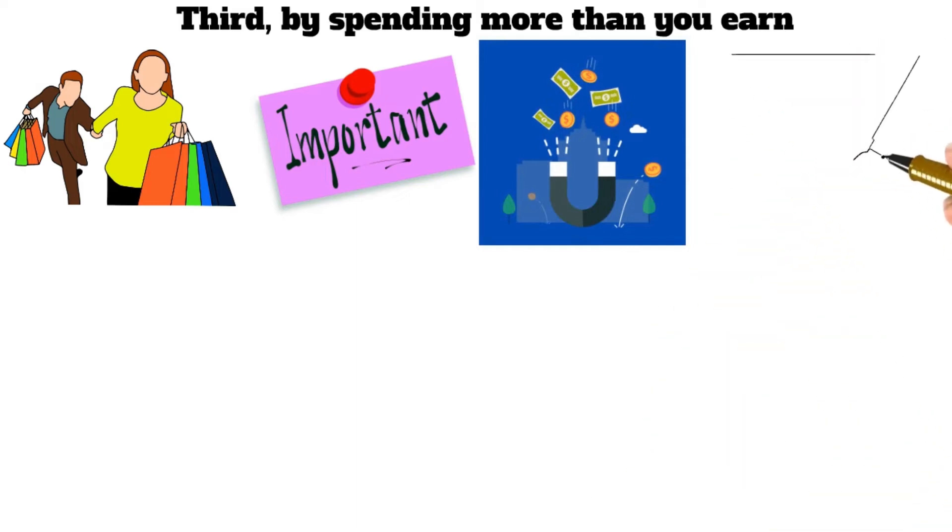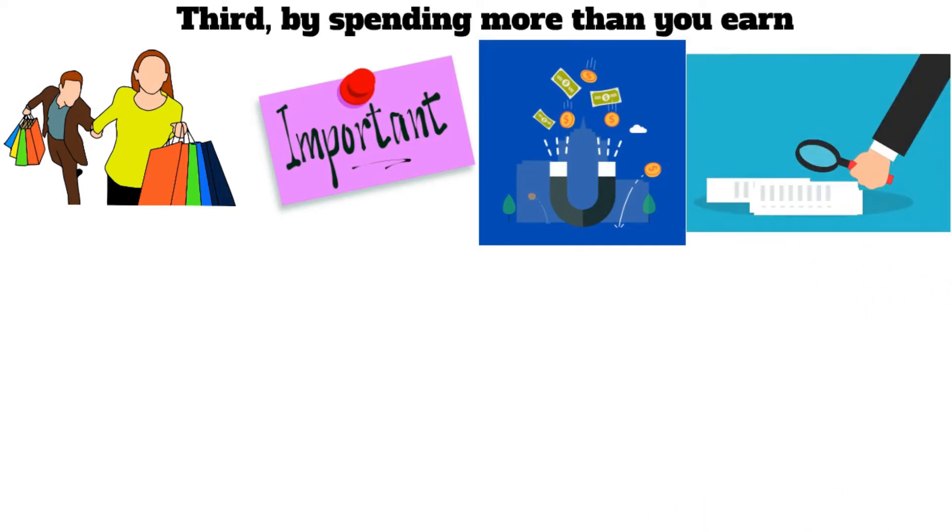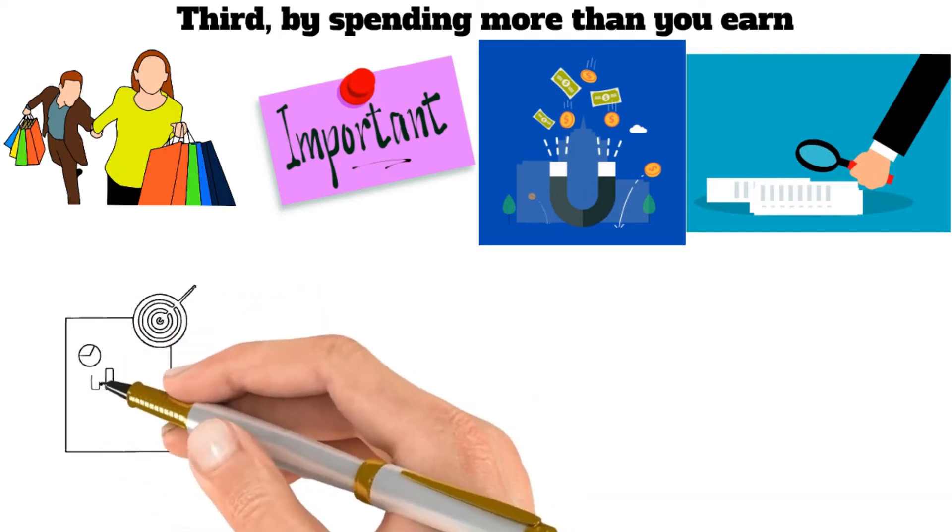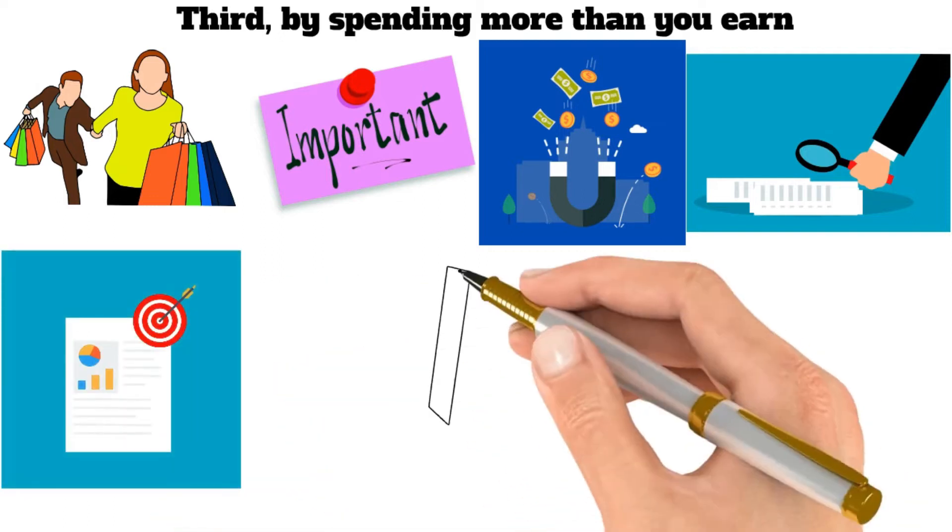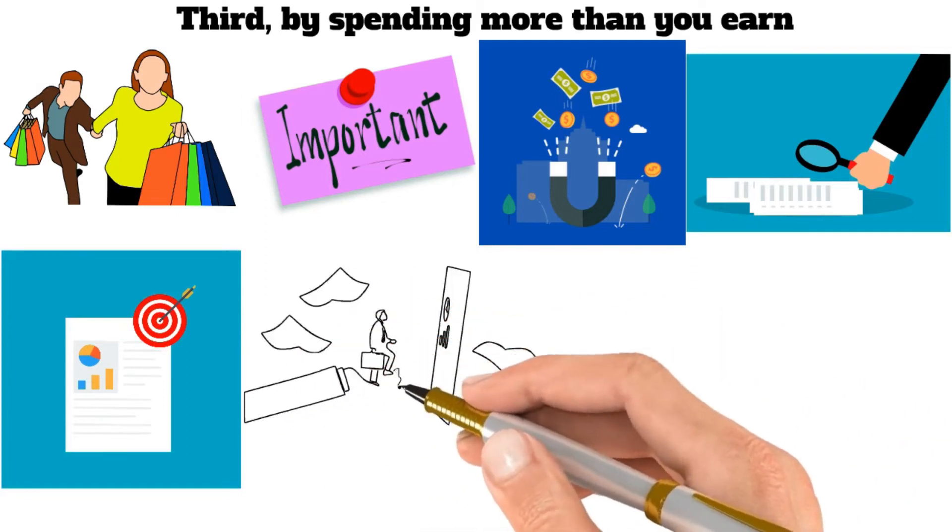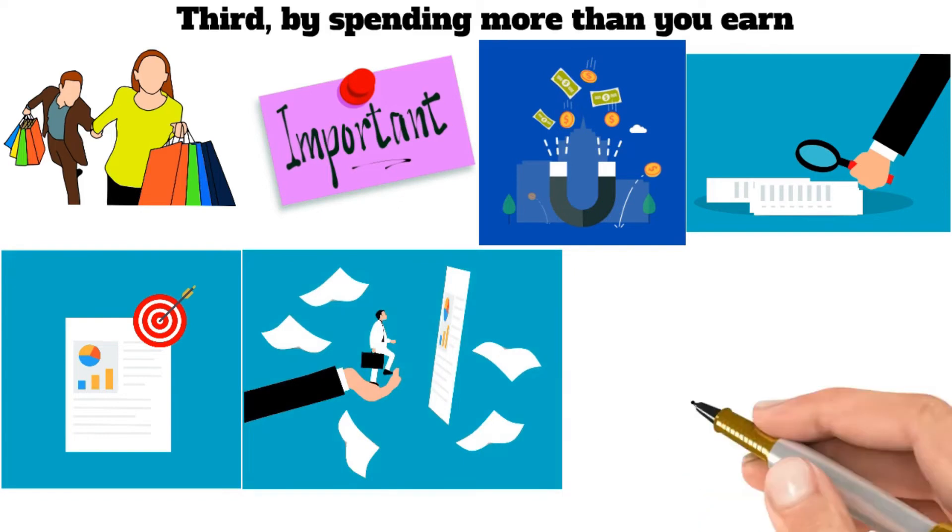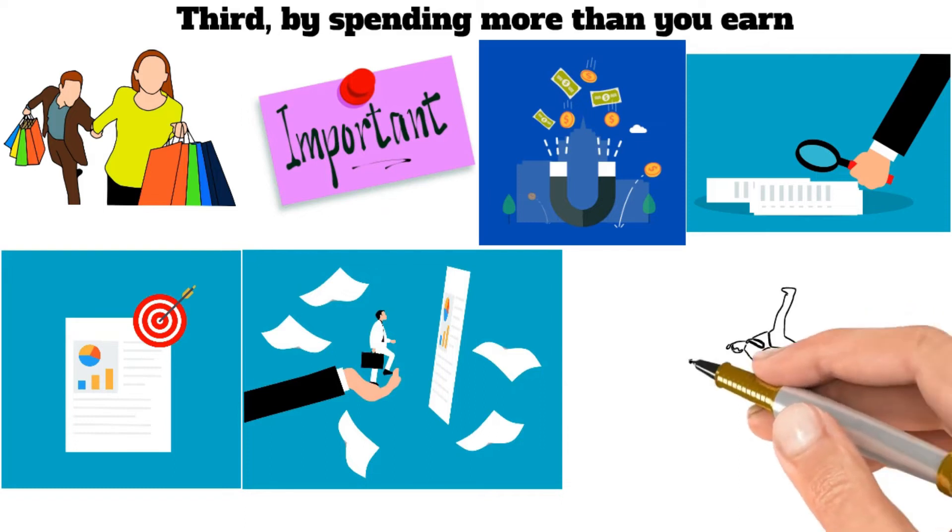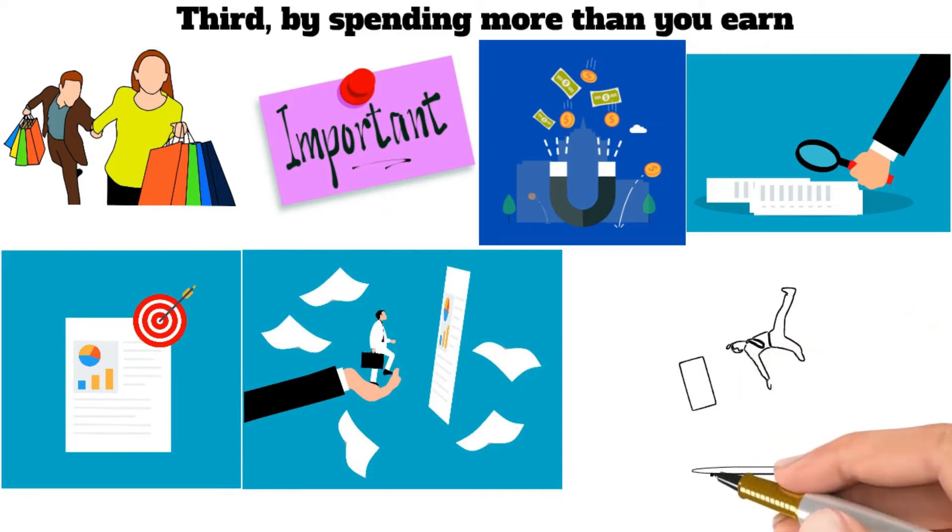There are a few ways to help break the habit of spending more than you earn. First, try to become aware of your spending patterns. Track where you're spending your money and see where you can cut back. Second, create a budget and stick to it. Finally, make a goal to save money each month so you have a cushion in case of unexpected expenses. By making these changes, you can break the cycle of spending more than you earn and start on the path to financial security.